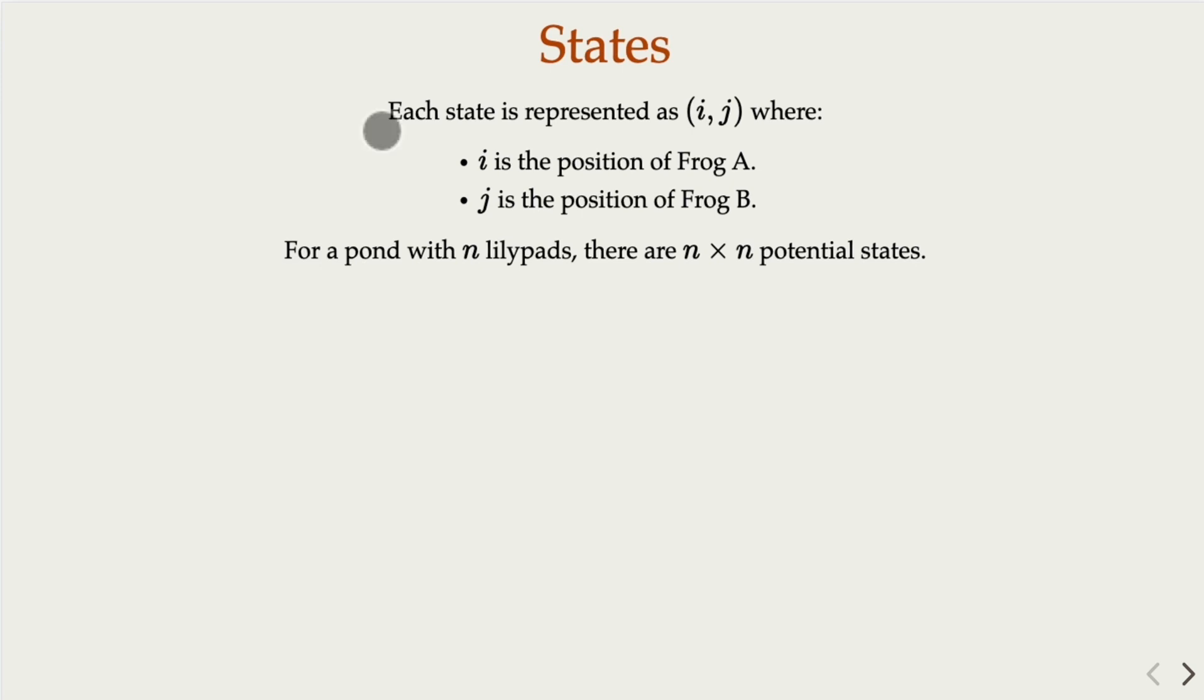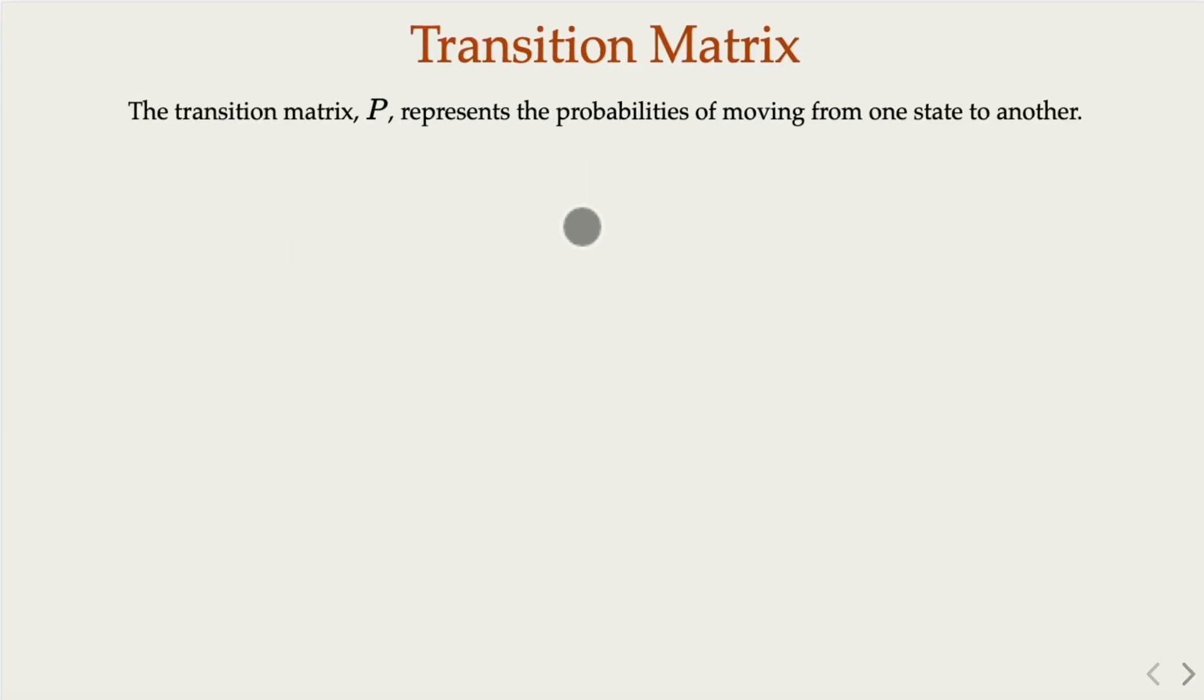Since we have two frogs, we're going to use the position ij. i is the position of frog A. i is any value from 1 to n, but j is also 1 to n. So there are total n squared potential states. We're going to define what is the transition probability from one state to the other. So here we have n squared states.